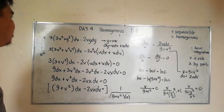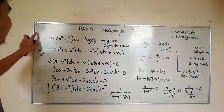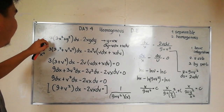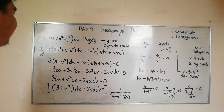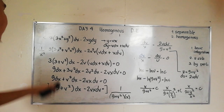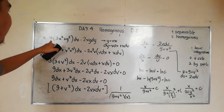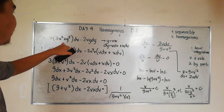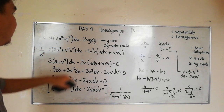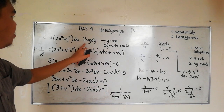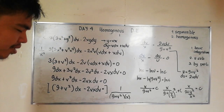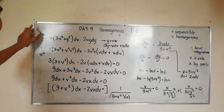Good morning class. We have problem number one for day four. The problem is: quantity (3x² + y²)dx minus 2xy dy.